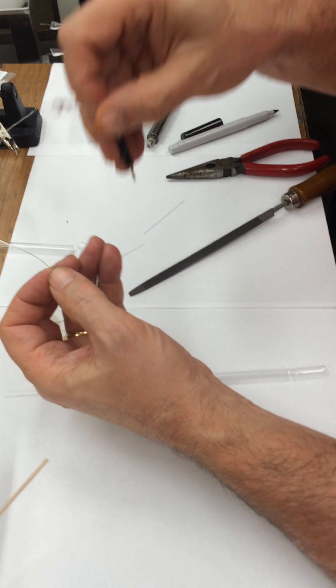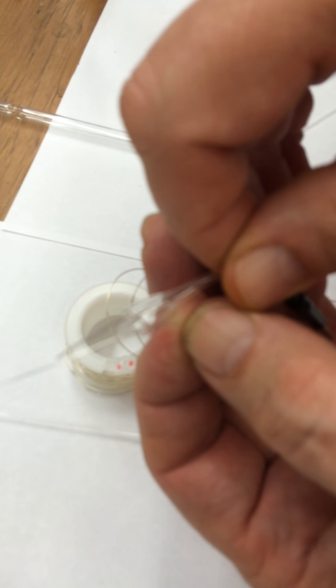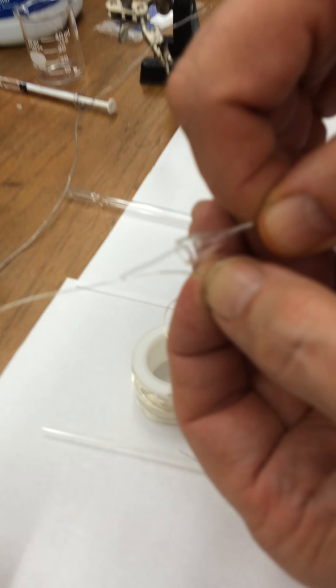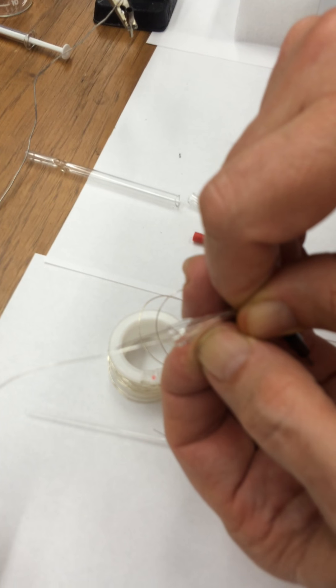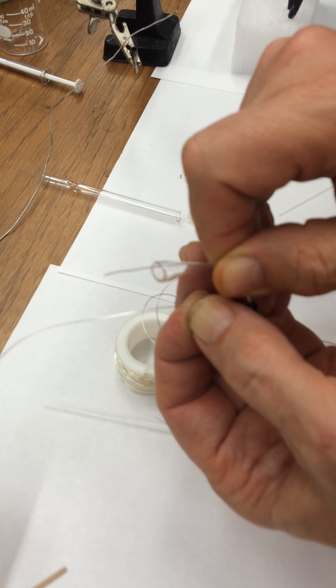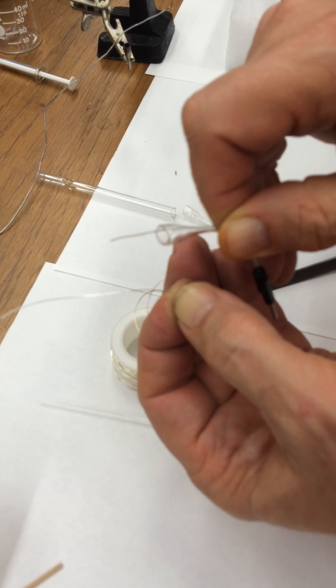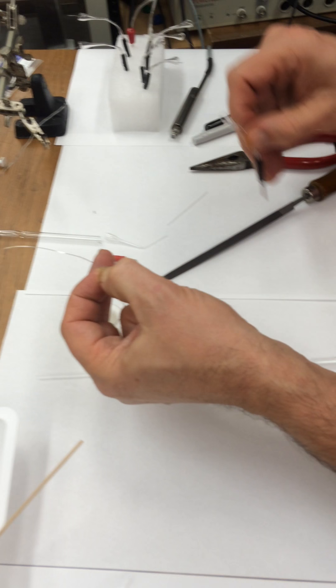Let me just show you the difference between a chlorided silver wire and one that has not been chlorided. See how shiny that one is and how gray the top one is? This one sat for 20 minutes in chlorine bleach. Okay, now after you've chlorided your wire, you go ahead and wash it off.